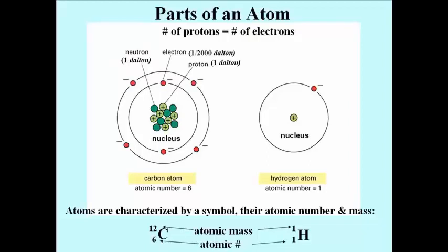We use the convention shown here in the carbon and hydrogen examples to indicate the element by its symbol, its atomic number, the left subscript, and mass, the left superscript.